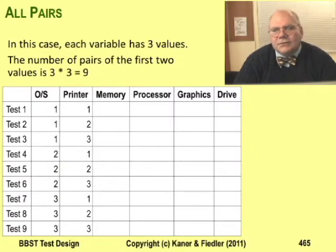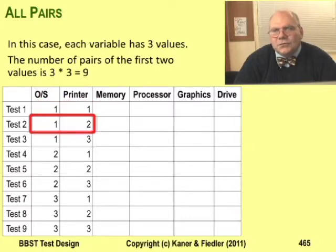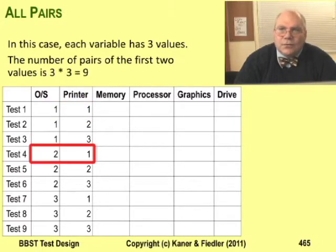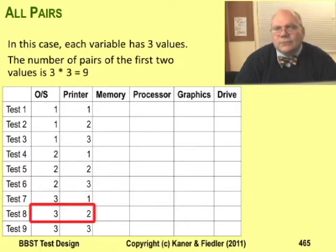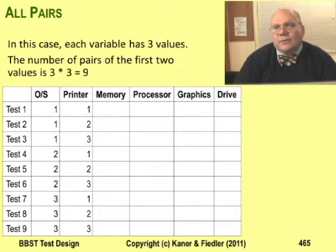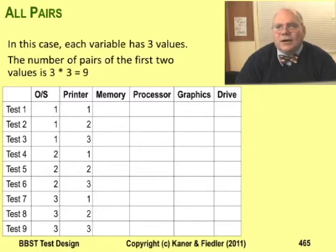When I say all the pairs are there, I mean you've got a one with a one, a one with a two, a one with a three, a two with a one, a two with a two, a two with a three, and a three with a one, a three with a two, and a three with a three. Every possible value for the first variable is paired with all the possible values of the second variable — all pairs.